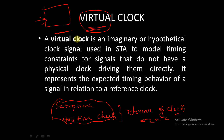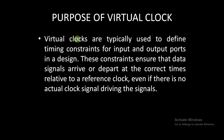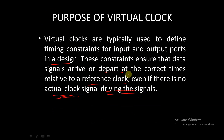You take this virtual clock as a reference clock and calculate all the timing parameters of that particular circuit or module. Virtual clocks are typically used to define timing constraints for the input and output ports in a design. These constraints ensure that data signals arrive or depart at the correct times relative to the reference clock, even if there is no actual clock signal driving those signals.